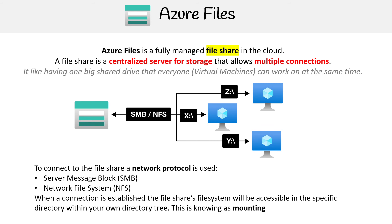You'll notice it says Z, X, and Y. On Windows, you'd have the option when you mount it to say you want to mount it to Z. So anytime you access Z on your Windows server, it's actually going to be using Azure Files.